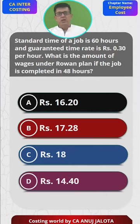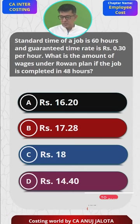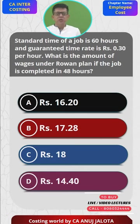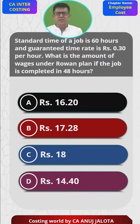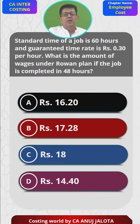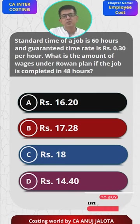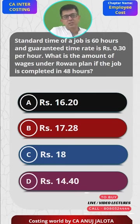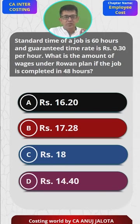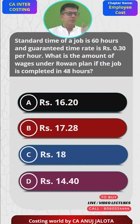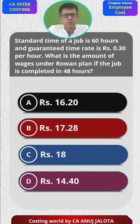Under the Rowan scheme, first we compute basic wages. Time allowed was 60 hours but the worker worked for 48 hours, so he'll be paid for 48 hours at the rate of 0.3, which is 14.4. So 14.4 will be his basic wages. Now we give him the bonus as per the Rowan Plan.